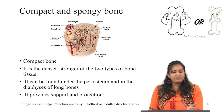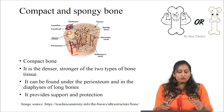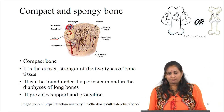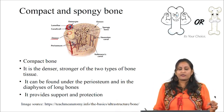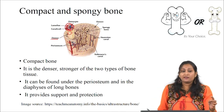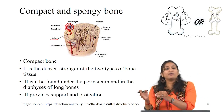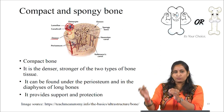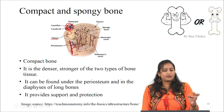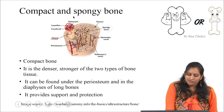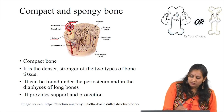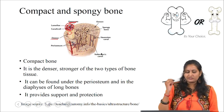Blood vessels, nerves, and branches at right angles pass through the Volkmann's canal or perforating canal, which connects to the periosteum or endosteum. Osteocytes present in the lacunae are found adjacent to the lamellae of the osteons. As explained earlier, nutrient exchange is done by canaliculi — one canaliculus connected to another, eventually connecting to the central canal where blood vessels and lymphatic vessels are present. The osteocytes are nourished by these blood vessels, and nutrients are transported through the central canal.